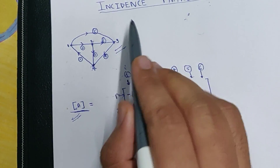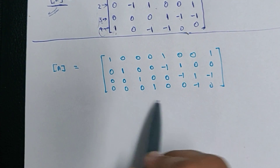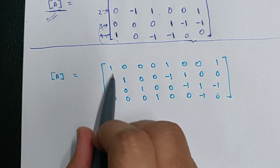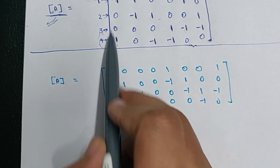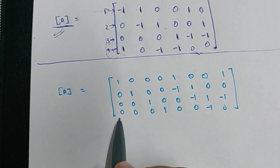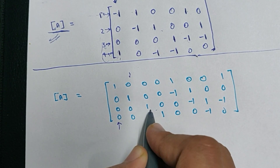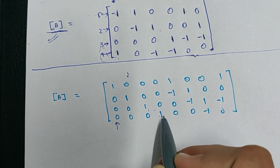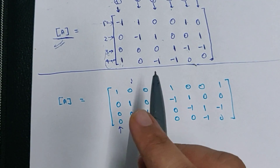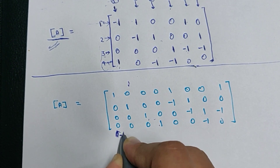Now suppose we are given this incidence matrix. As soon as you see the question, notice the property I just told you — the sum of all elements in any column must be equal to zero. But here in this column the sum is 1, here also it is 1, here also 1, here also 1. Therefore it is not zero, so we have to make it zero to make it a proper incidence matrix. So let's suppose we put an element -1 in this row.